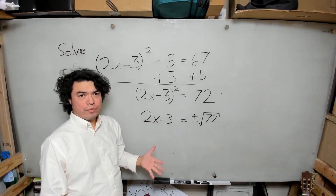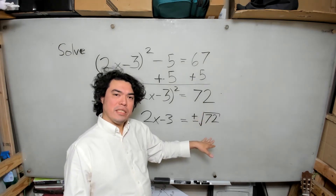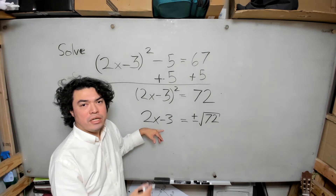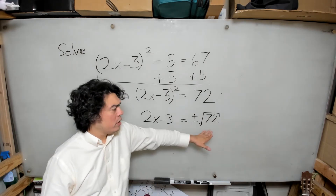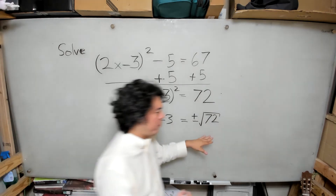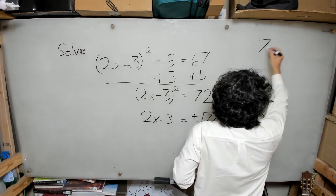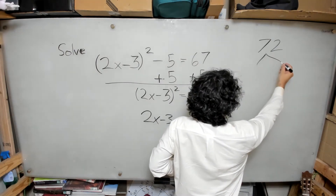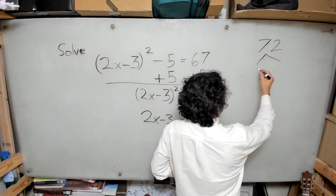Now the square root of 72 is not a perfect square. If it were the square root of 49, we'd know it's plus or minus 7, and we could set that equal to positive 7 and negative 7 to find the two roots. But since this is 72, it's not a perfect square, so I'm going to do the factor tree to calculate what the square root simplifies to.